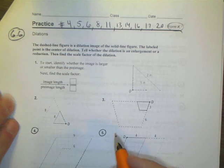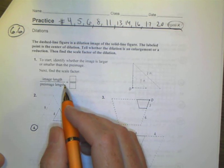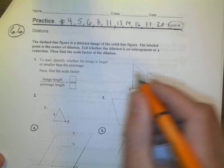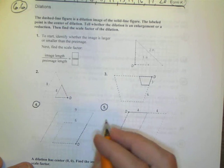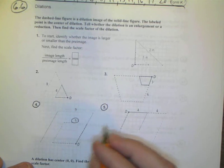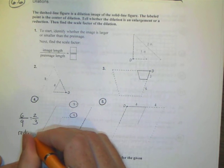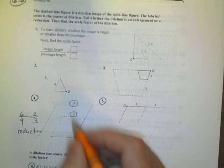Our first section wants you to find the scale factor when they give you an image length over the pre-image length. The image length is the new one with the dashed lines, and the pre-image is the solid line. Looking at number 4, we have our image length which is our dashed line, has a length of 6. Our pre-image length is 9. So I have 6 over 9, and I reduce that down to 2 thirds. I can tell that this one is a reduction because it's less than 1, so I'm making the image smaller from the large one to the smaller one.